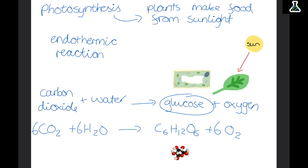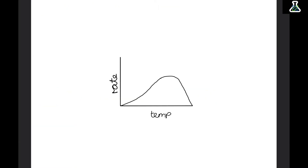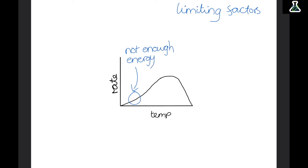Lots of different things can affect how fast or slow photosynthesis can happen, and these things are called limiting factors. The temperature of the environment is a limiting factor. If the plant is too cold the enzymes inside don't have enough energy to work. But if the plant is too hot, the enzymes that control photosynthesis denature.